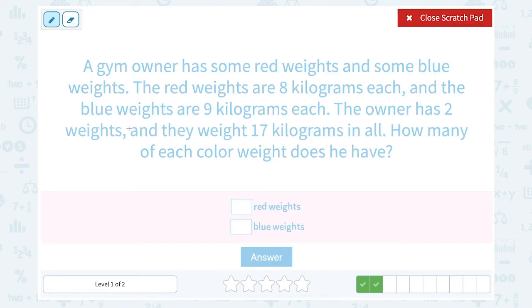In this case, they told us he has two weights and they weigh 17 kilograms. So if he has two, he either has two red, two blue, or one red and one blue. Let's see, if he had two red, well, those are eight kilograms each. So that would be two times eight, or 16 kilograms. That doesn't quite work because we need 17.